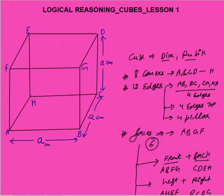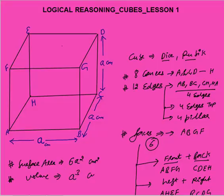So we have 6 faces, 12 edges, and 8 corners. What about the surface area? Surface area means area of all the surfaces. Each surface is a square with side 'a', so area of each square is a². We have 6 surfaces, so total surface area is 6a². The volume of this cube equals a³ cubic centimetres — volume is length × breadth × height = a × a × a = a³.